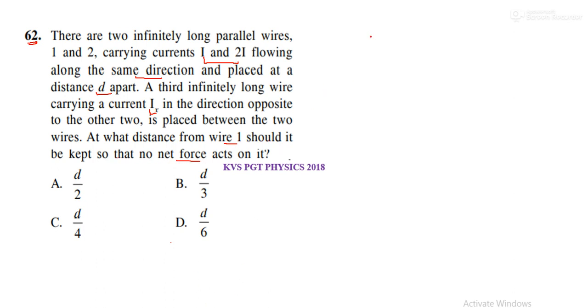Here we have two wires. Here is the first wire and here is the second wire. The current flows in the same direction. Here is the current i and current 2i.